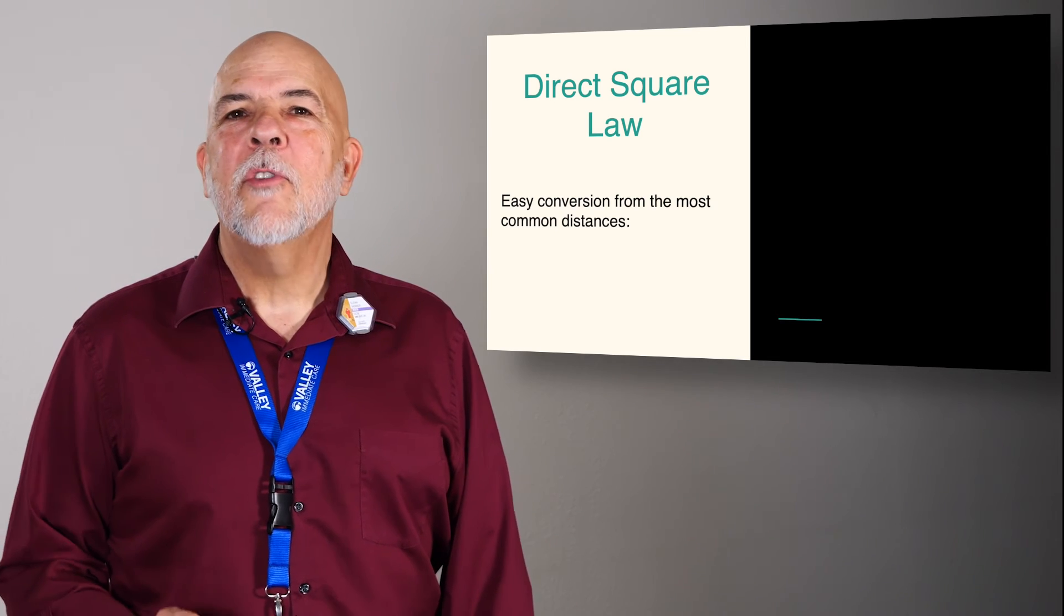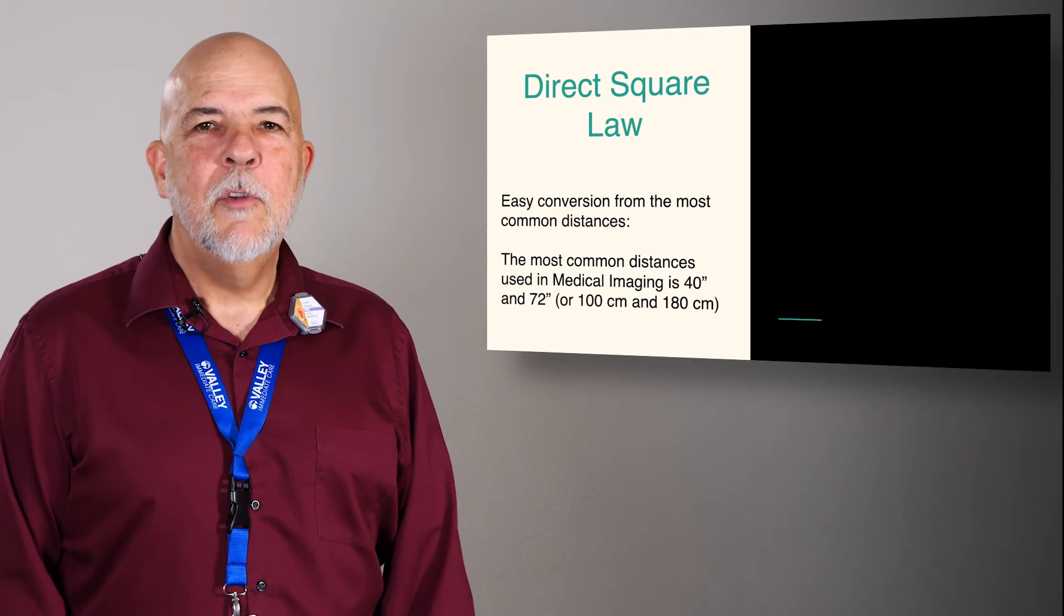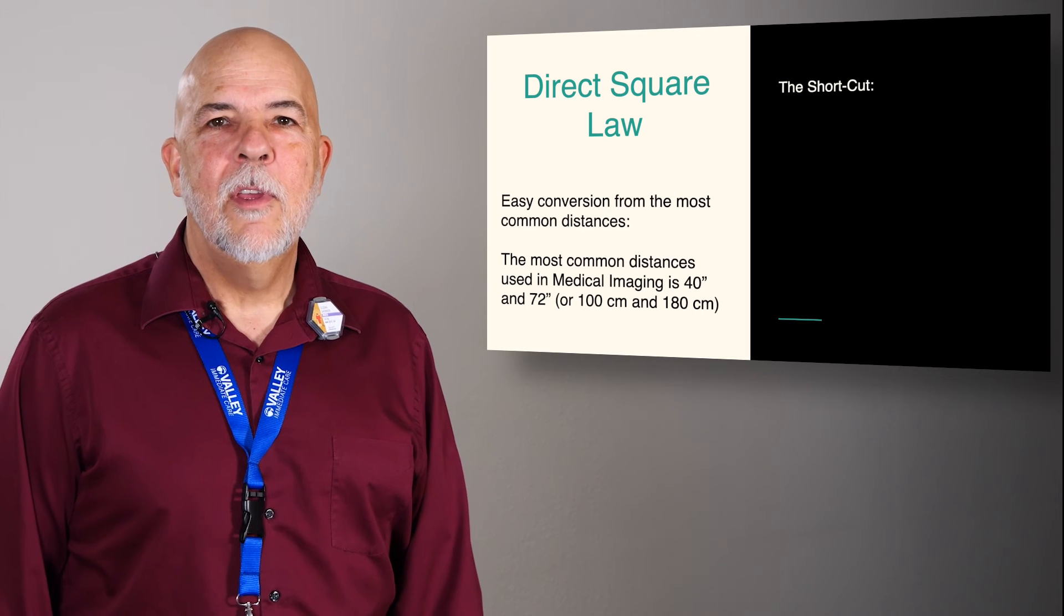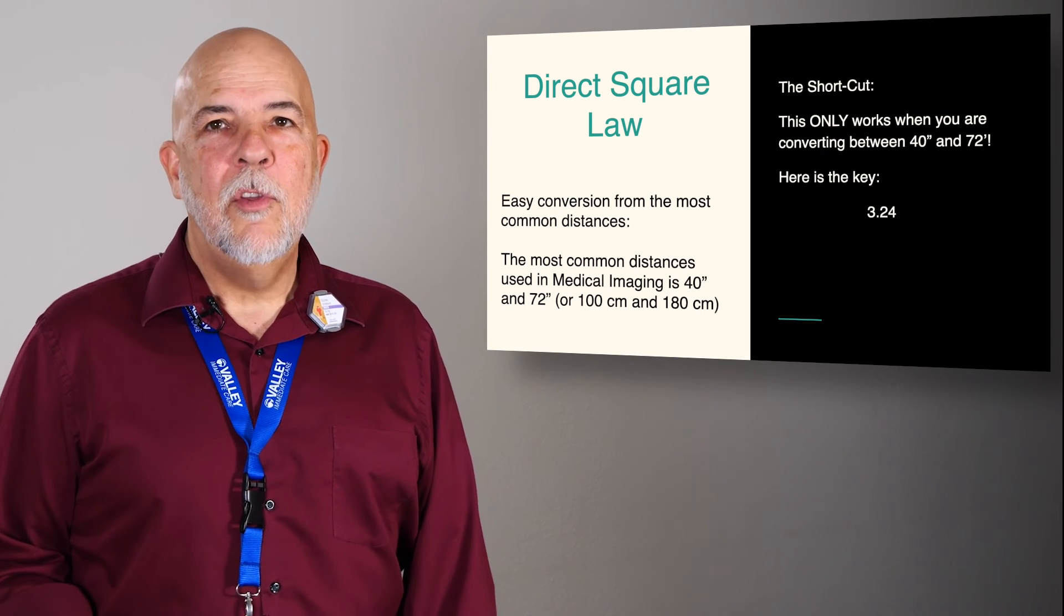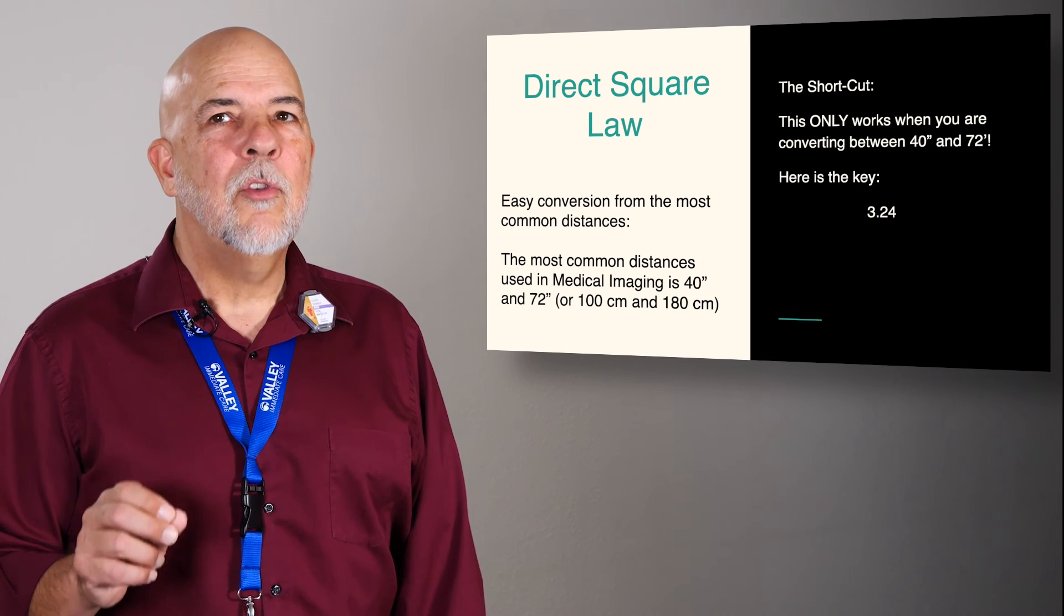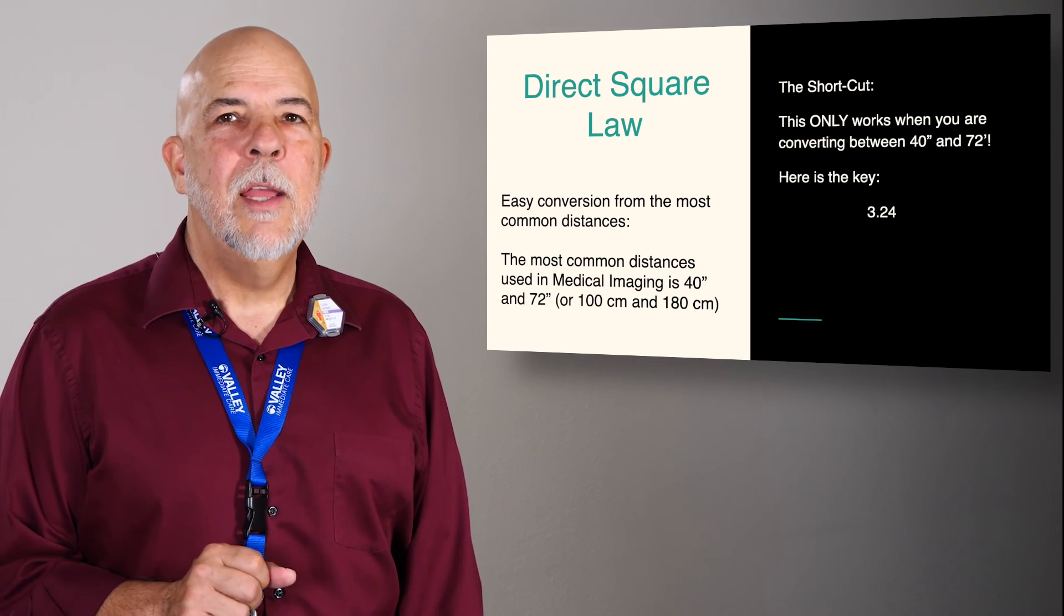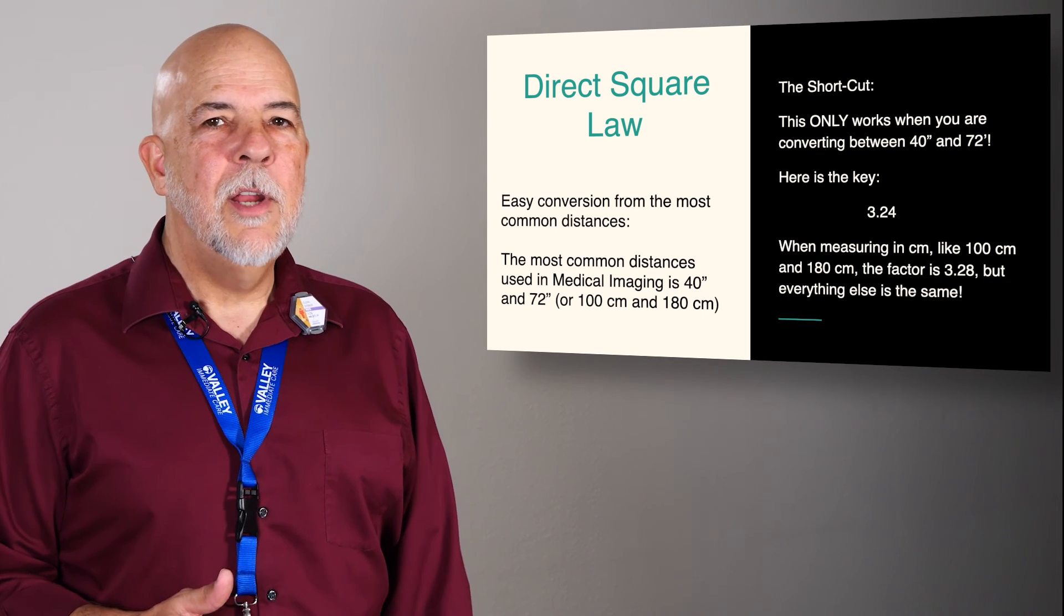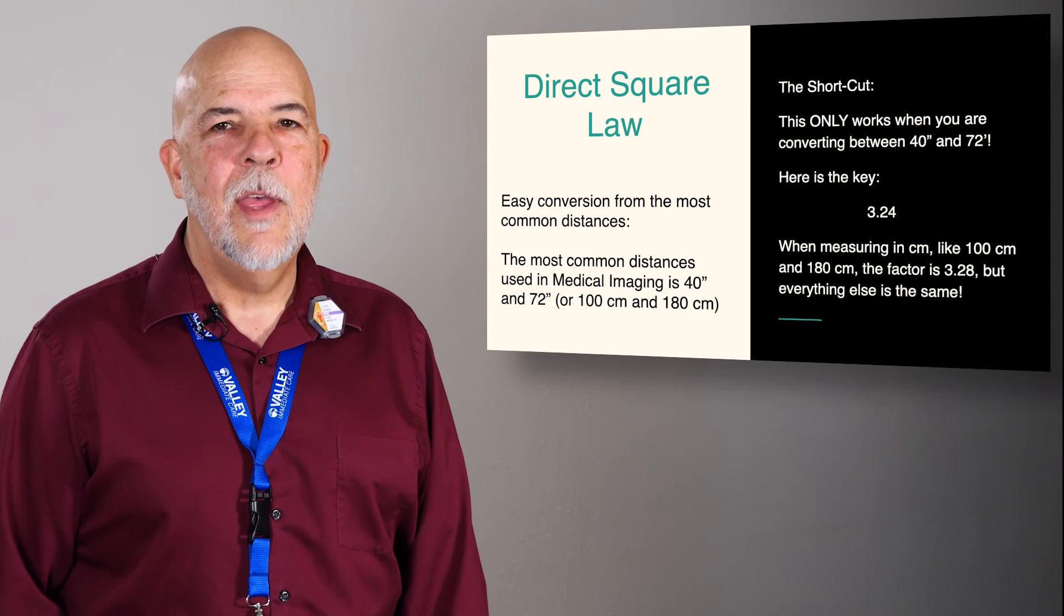The easy conversions for the most common distances, 40 and 72 inches, or if you're any place other than the United States, 100 and 180 centimeters. So the shortcut is 3.24. This only works going from 40 inches to 72 or from 72 to 40 inches. The same thing does work with 100 and 180 centimeters, but the factor is 3.28. Everything else is exactly the same.